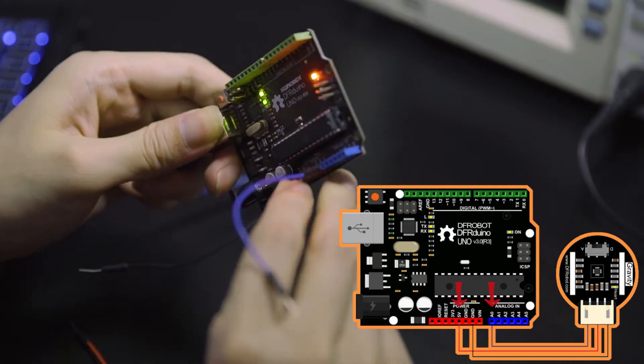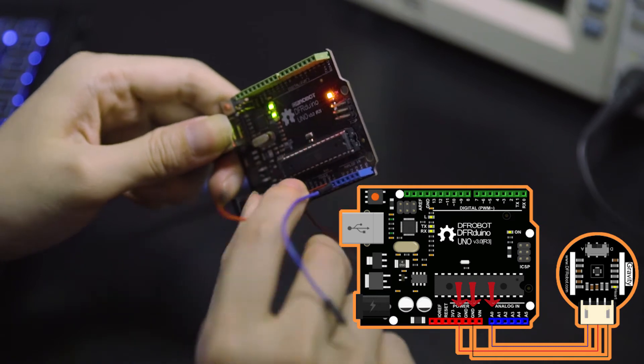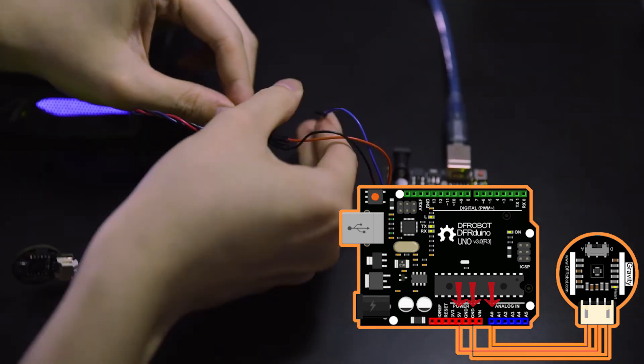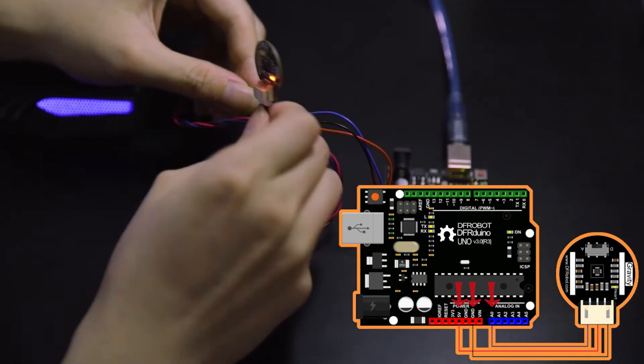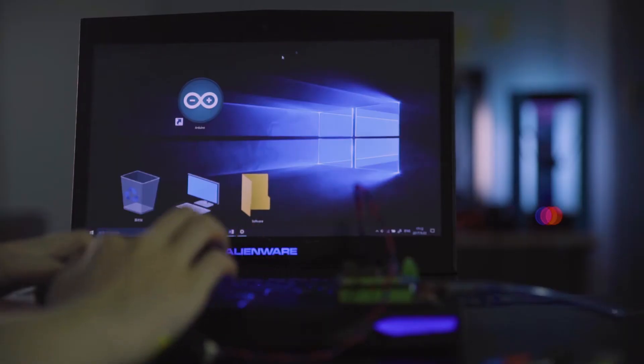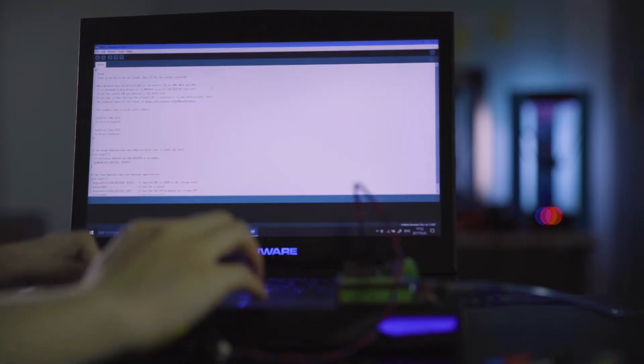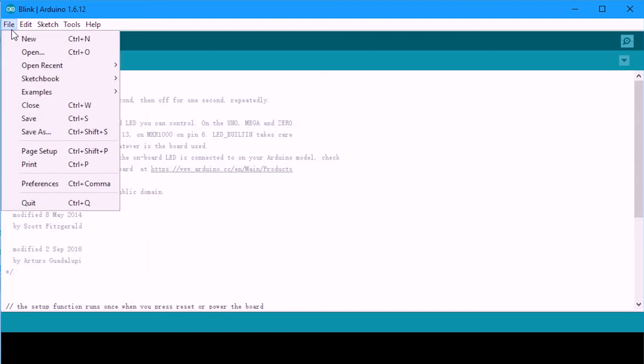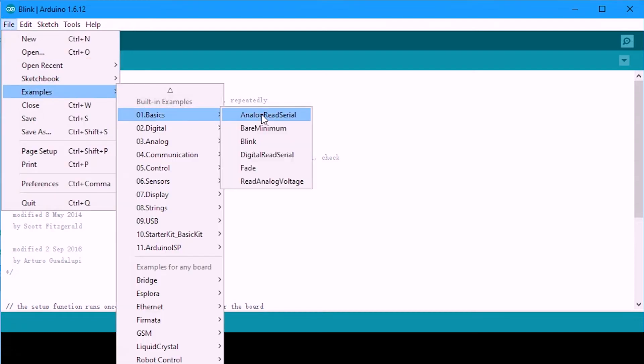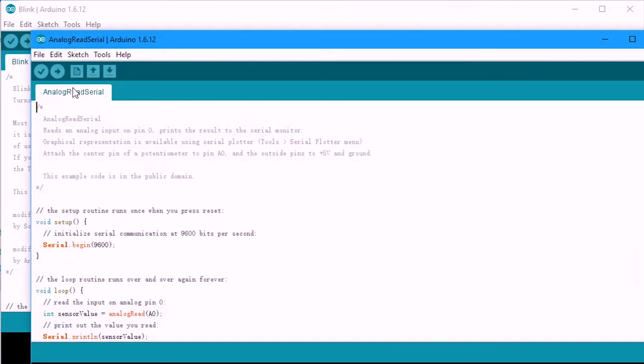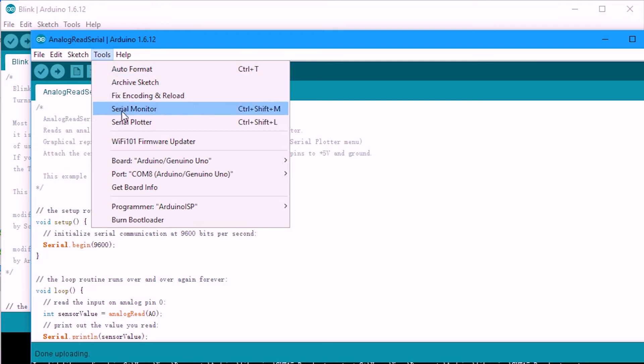Open IDE, select the right board type and COM port, then go to Example, Analog, and open AnalogInOutSerial. Upload the code to Arduino board.